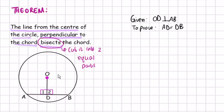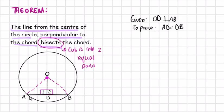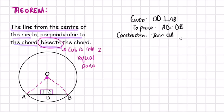To prove this we are first going to have to construct some things. We are going to join the points OA and join the points OB, and now we have two triangles — two right angle triangles. If we can prove that these two triangles are congruent, it would mean that all the corresponding sides are equal. So we'll use congruency to prove that these triangles are congruent. Construction: joining OA and OB.